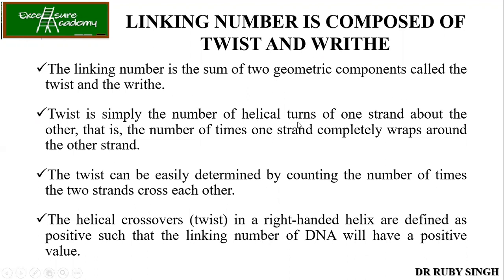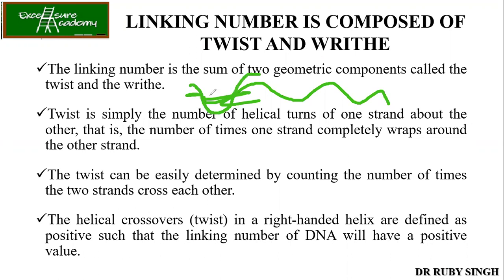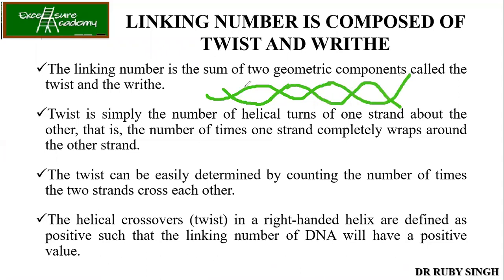Twist is simply the number of helical turns of one strand about the other — the number of times one strand completely wraps around the other. The twist can be easily determined by counting the number of times the two strands cross each other. Helical crossovers in a right-handed helix are defined as positive twist; if it is left-handed, then it is negative. Looking at the figure, if there are 360 base pairs, how many linking numbers will there be?